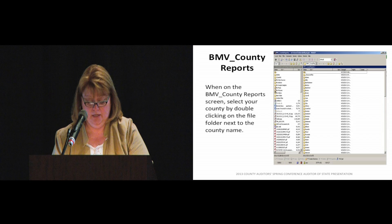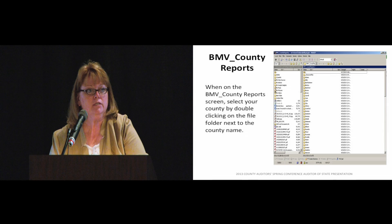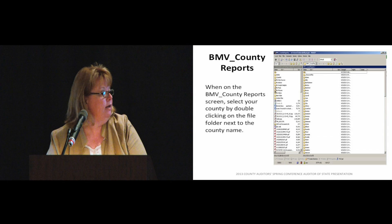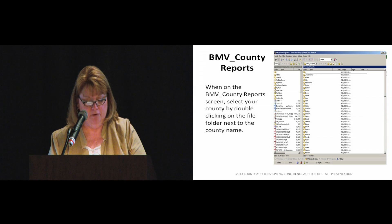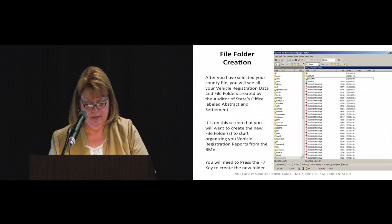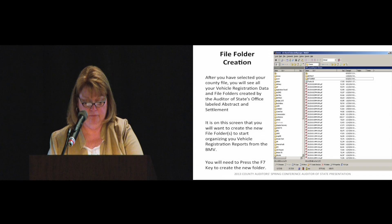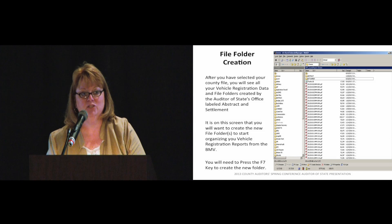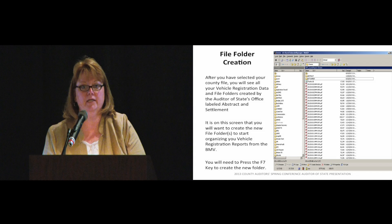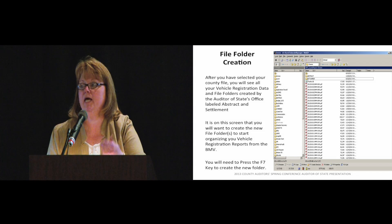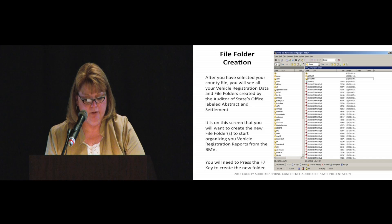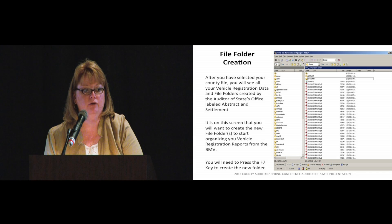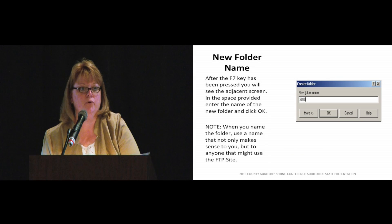Let me apologize to Greene County because yours was the first one I came to that needed a little help, so you're my guinea pig here. When you come in, you're going to see all the counties listed, and you're going to find your county and double-click on that folder. After you've selected your county — here's Greene County — we have one abstract file, one settlement file, and the rest are BMV files. If you look at the dates, it goes all the way back to 2010, so if they're trying to find 2013 stuff, they've got to scroll through 10, 11, and 12.